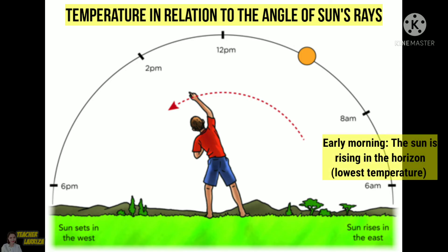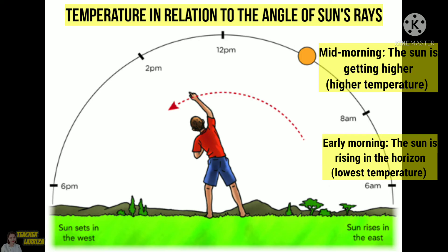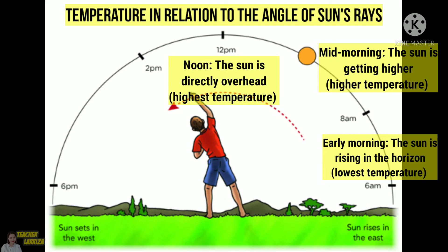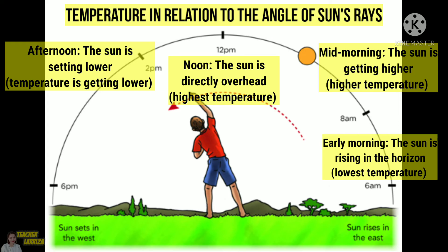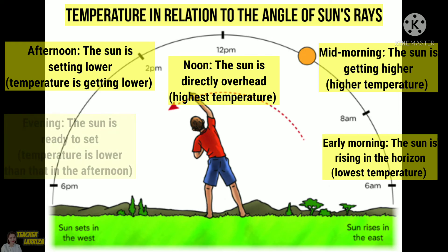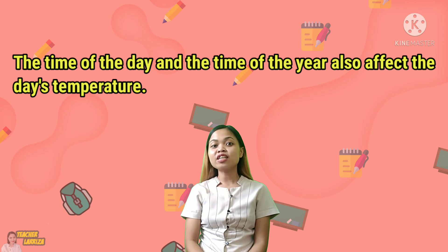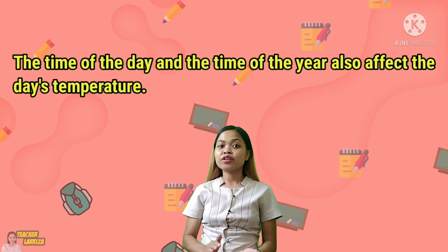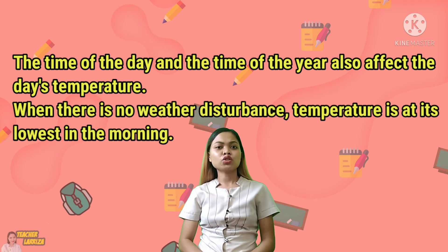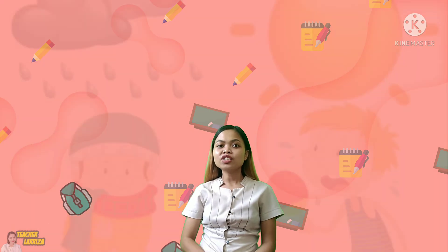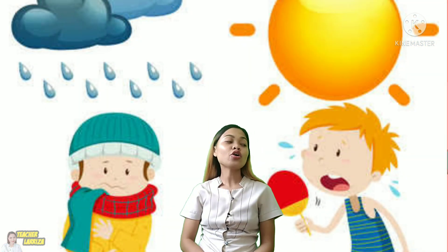Here's the temperature in relation to the angle of sun's rays. During early morning, the sun is rising in the horizon — the temperature is at its lowest during this time. In mid-morning, the sun is getting higher, and the temperature is also getting higher. At noon, the sun is directly overhead, and the temperature is at its highest. In the afternoon, the sun is setting lower, and the temperature is getting lower. During evening, the sun is ready to set, and the temperature is lower than that in the afternoon. The time of day and the time of year also affect the day's temperature. When there is no weather disturbance, the temperature is at its lowest in the morning. The temperature is low during rainy days and high on a fine weather.